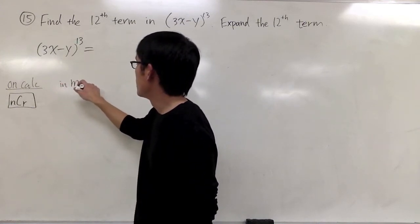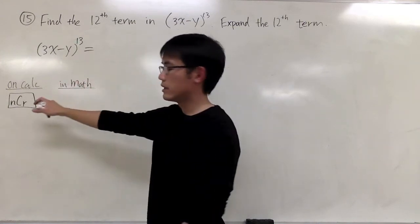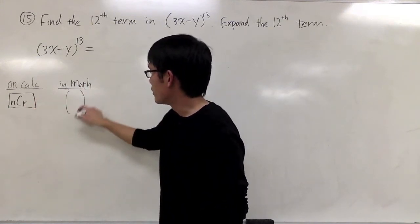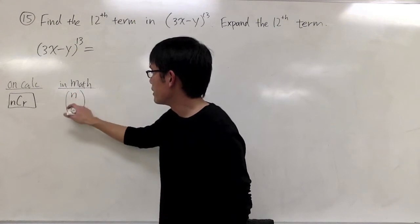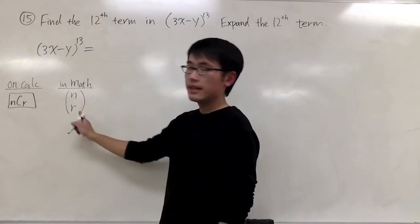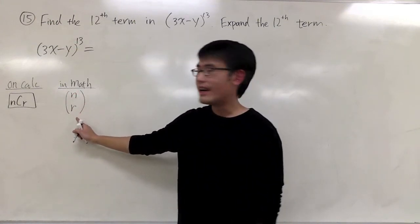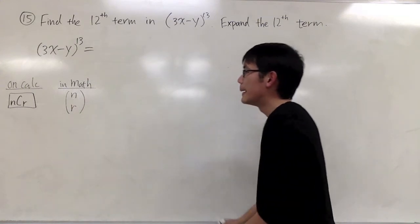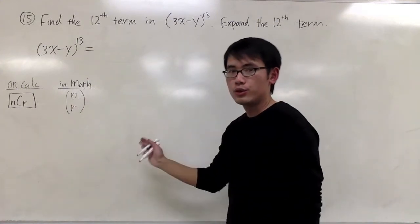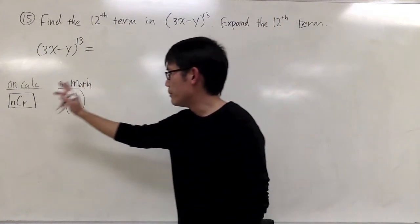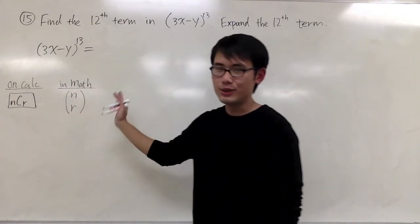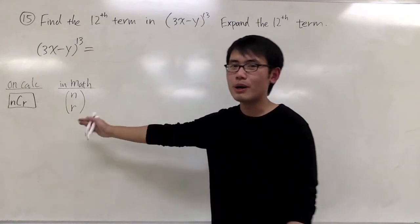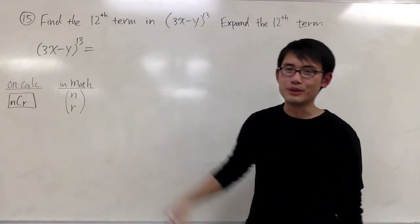The way we are going to write NCR is: open parentheses, put N on the top and R on the bottom — but this is not a fraction. We say this as 'N choose R.' Without going into too much detail, just do this on the calculator. That is the most powerful key in statistics, I will say.